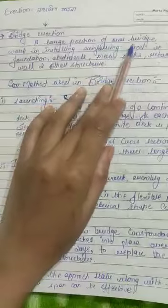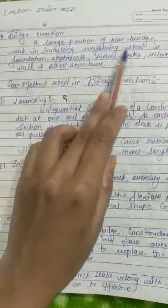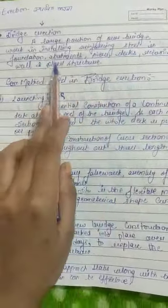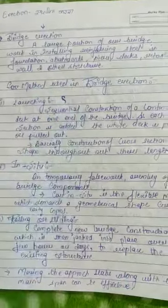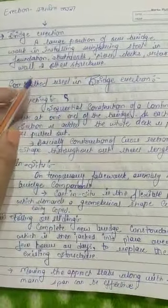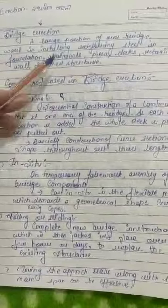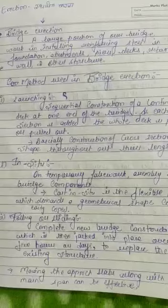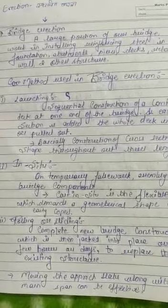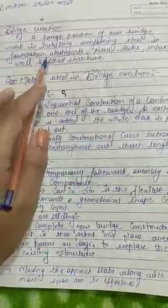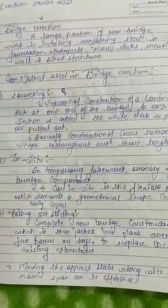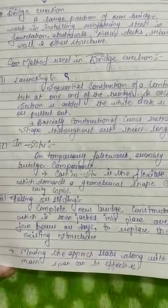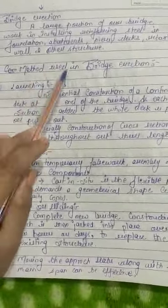Bridge erection covers a large portion of bridge work, including installation of reinforcing steel in foundations, abutments, piers, decks, retaining walls, and other structures. Some parts are constructed on-site, like the foundation or the pier, but the slab casting and the deck are built first and then installed on the bridge — so you can say it is the installation of the deck and the slabs.